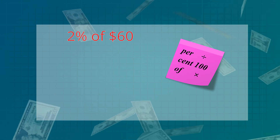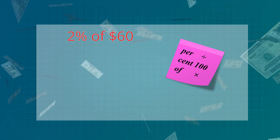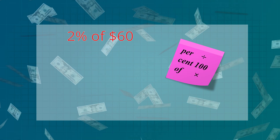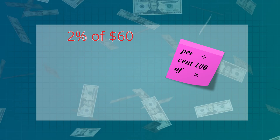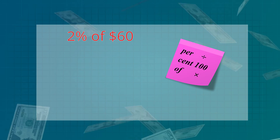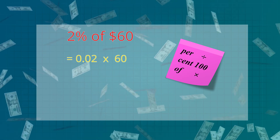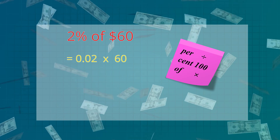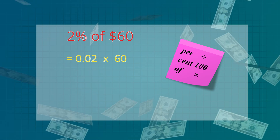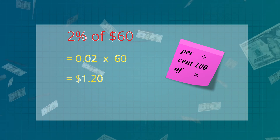With simple interest though, it is better to write the interest rate as a decimal instead of a fraction. So let's do the same question using a decimal. Two divided by one hundred is zero point zero two, with the two in the hundredths place. So zero point zero two multiplied by sixty is one dollar twenty.